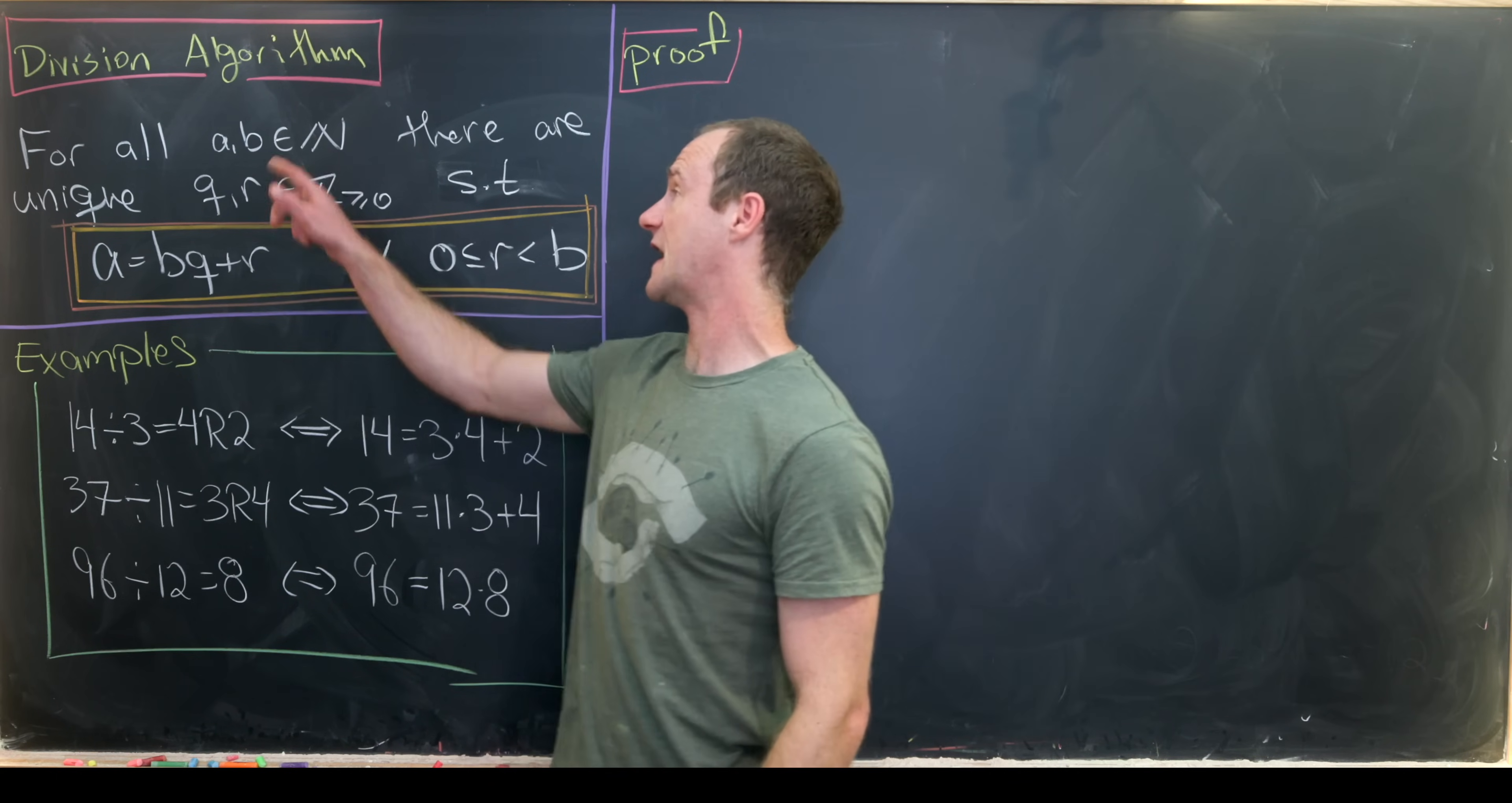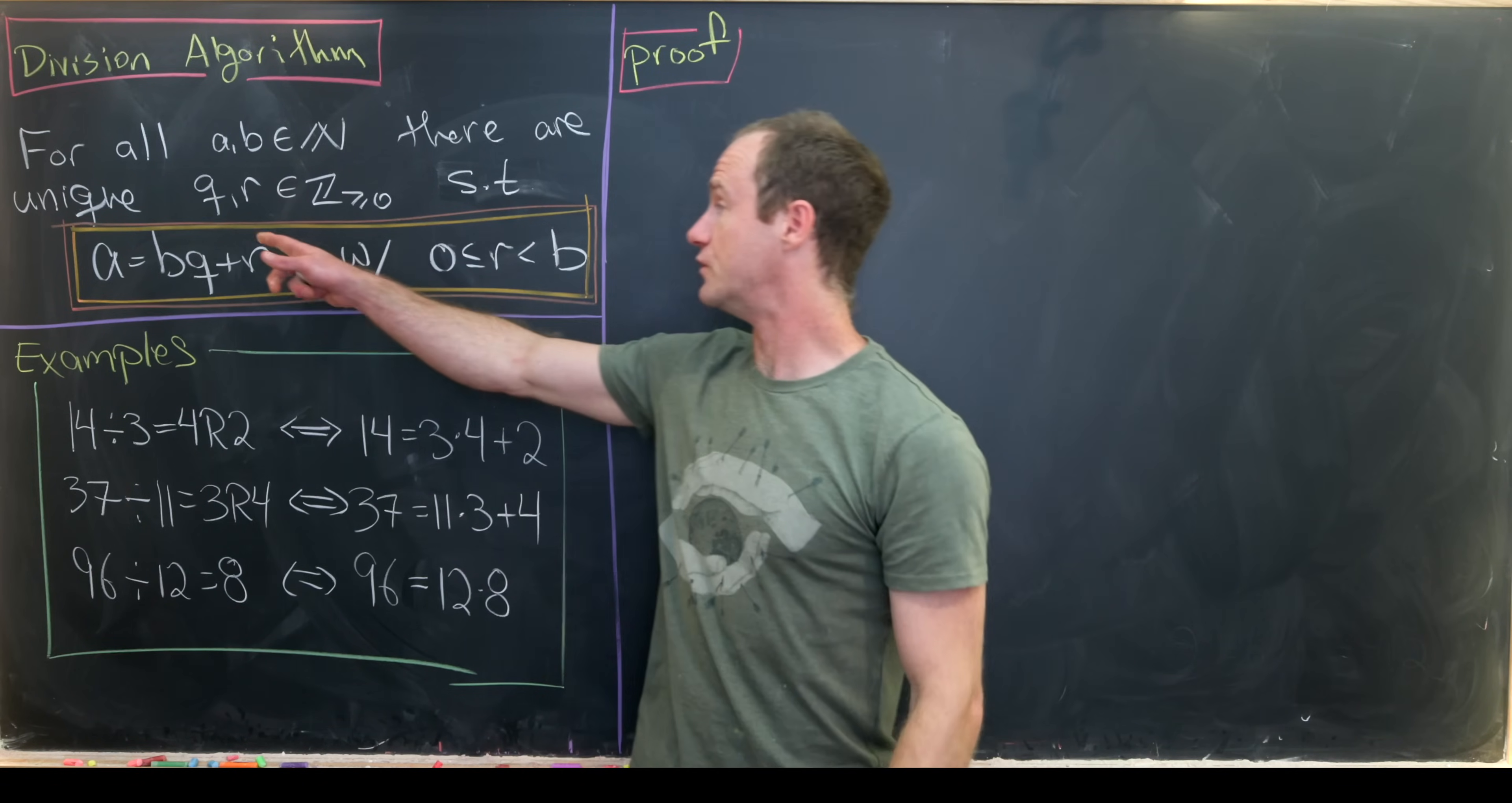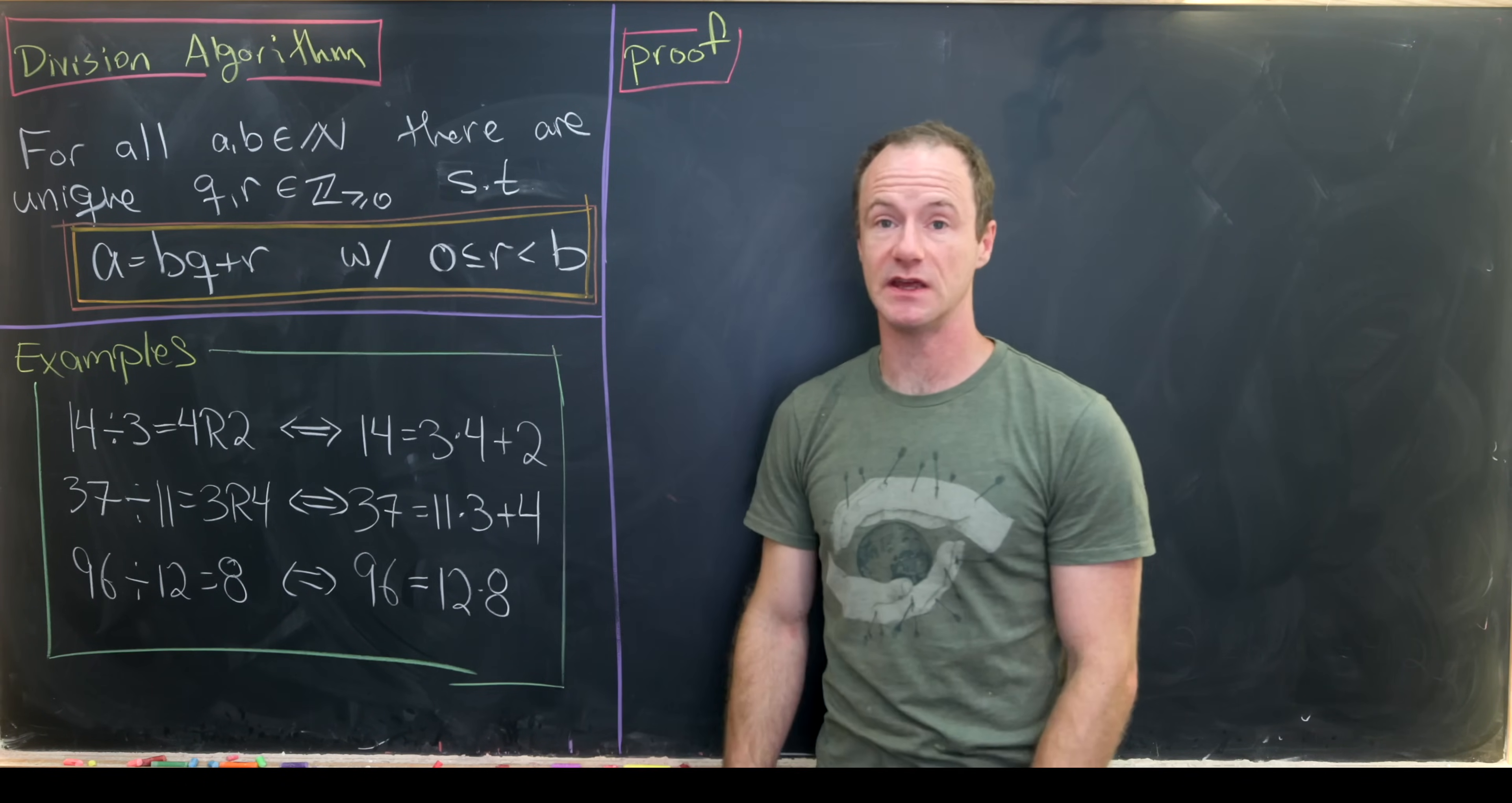It says for all natural numbers a and b, although this can be easily extended to the integers, but we won't do that, there are unique q and r which are non-negative integers satisfying the following equation.